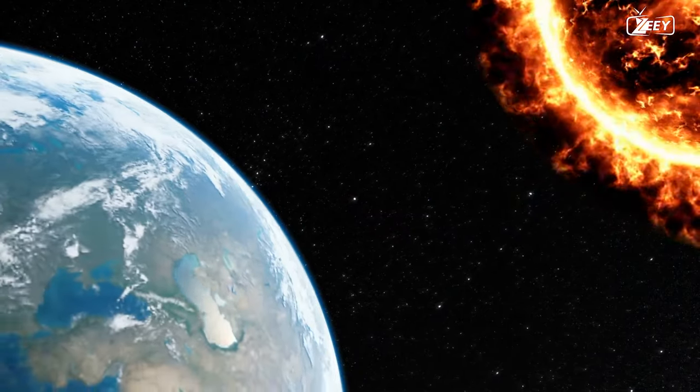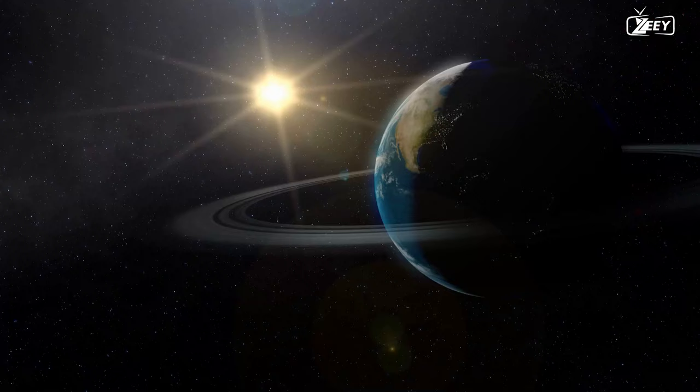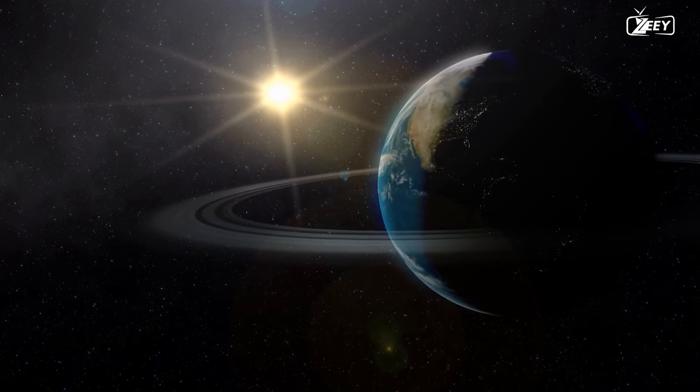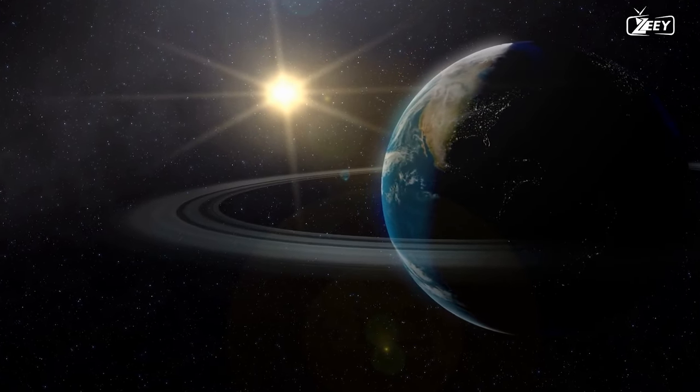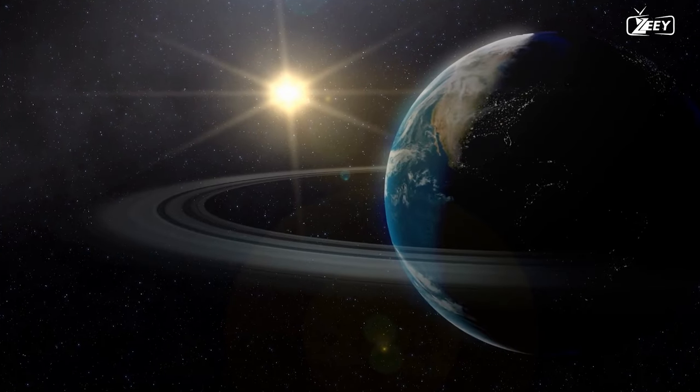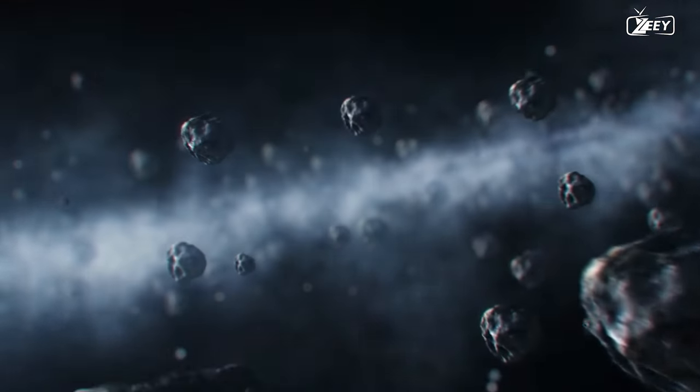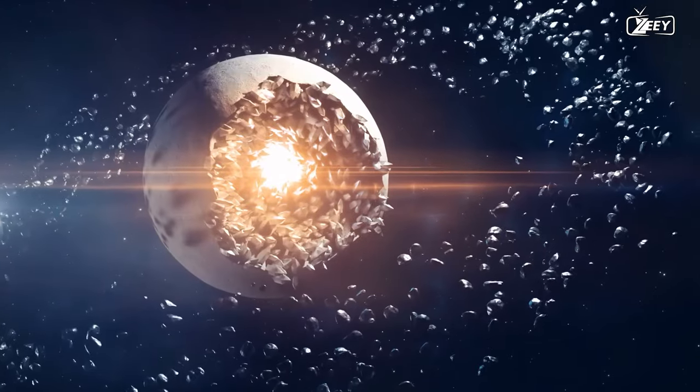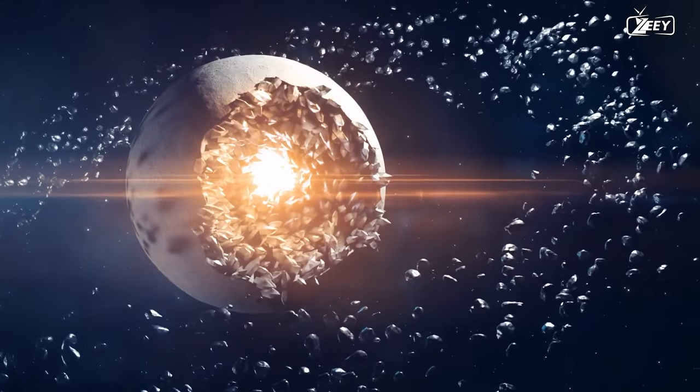What would happen if, instead of rings like Saturn's, the Earth had rings composed of minerals and dust like Jupiter, Uranus, or Neptune? As previously mentioned, the ring would be extremely dark and difficult to observe with the unaided eye. To be sufficiently visible, it would require a large number of asteroid fragments, which could only be obtained by destroying the moon.